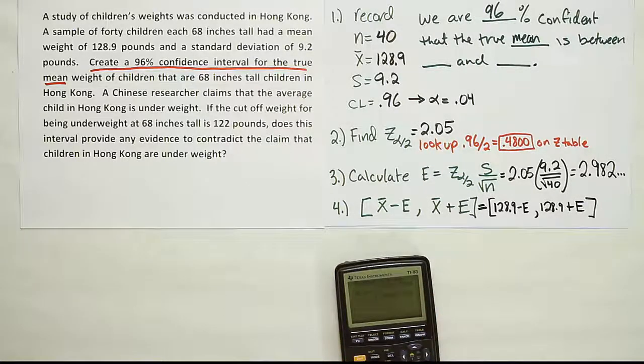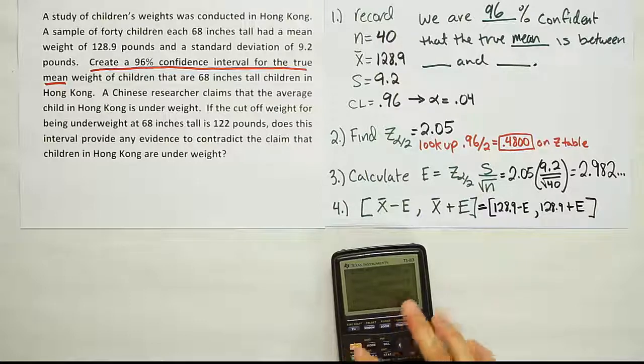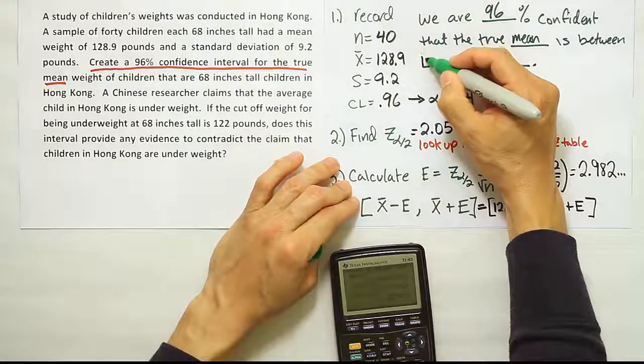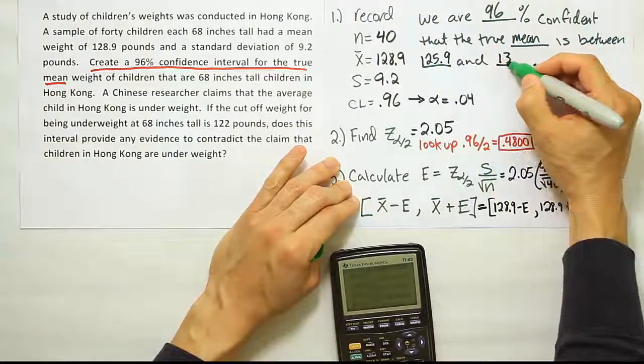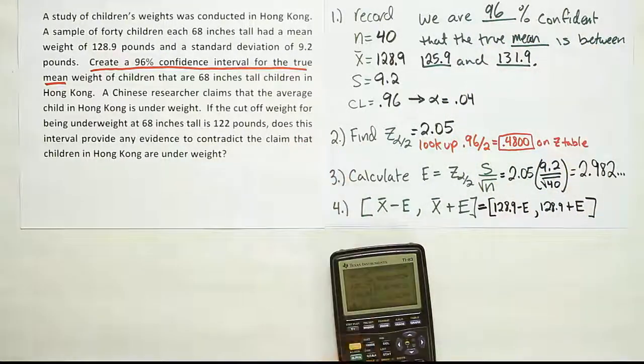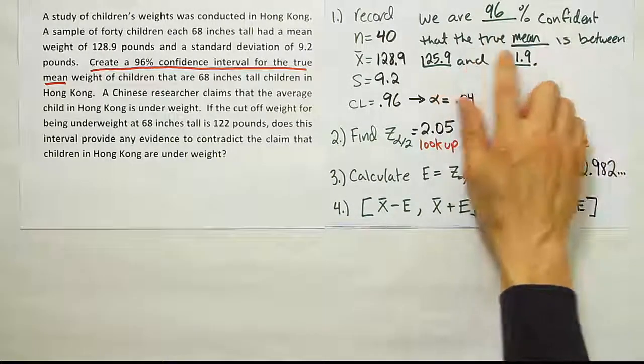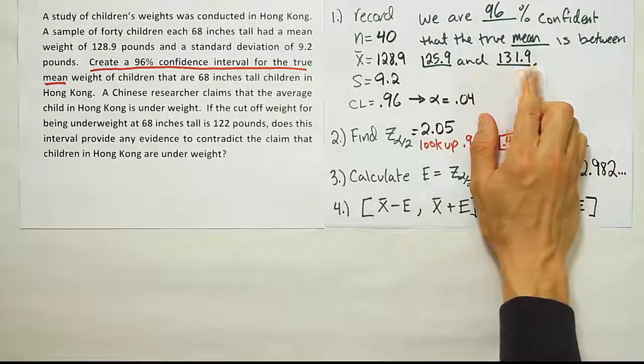Okay, so we're going to have 128.9 minus the error, and then the same 128.9 plus the error. Okay, and so our answer becomes 125.9 pounds up to 131.9 pounds. Okay, so that's our final result for the problem. We are 96 percent confident that the true mean is between 125.9 pounds and 131.9 pounds.